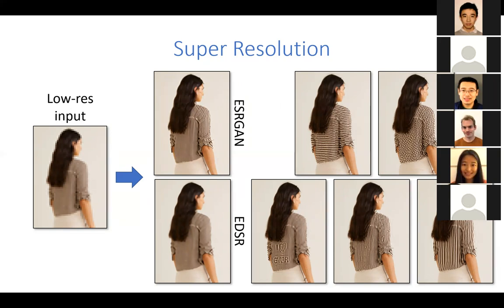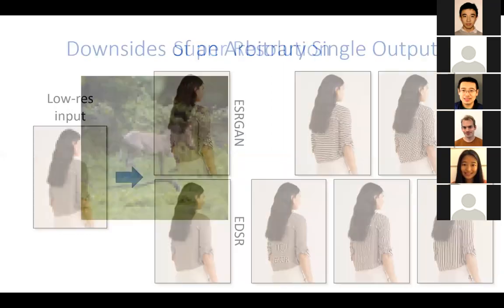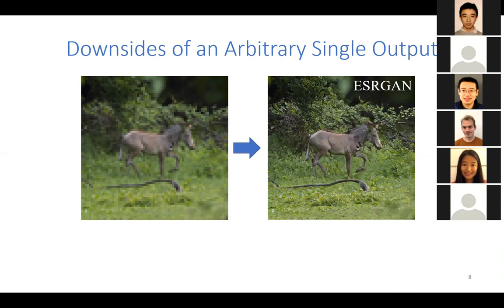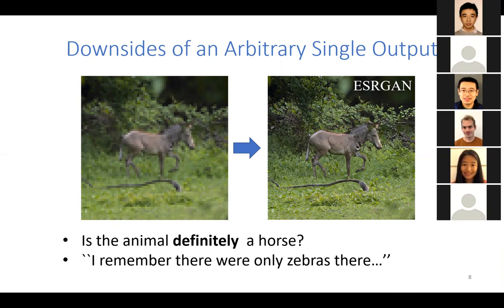This is problematic in several aspects. For example, let's say we have this low-resolution image and we feed it to EDSR-GAN and get a much nicer-looking result. But then we want to ask: is the animal in the image definitely a horse? We cannot answer this question using EDSR-GAN. Or perhaps I know that it should be a zebra, but I have no way of accommodating this prior knowledge into the output — I have a single output and that's it.